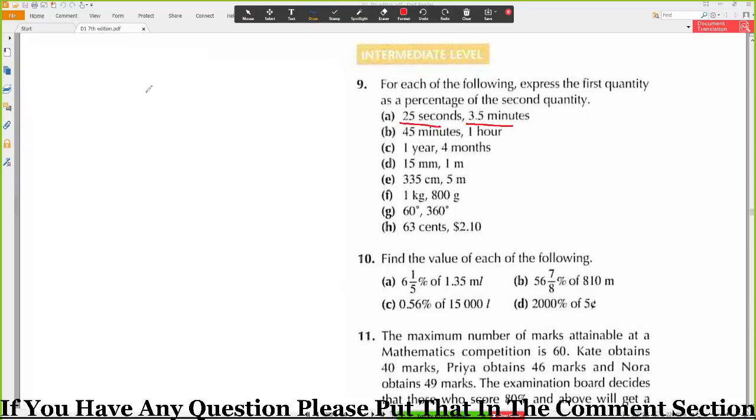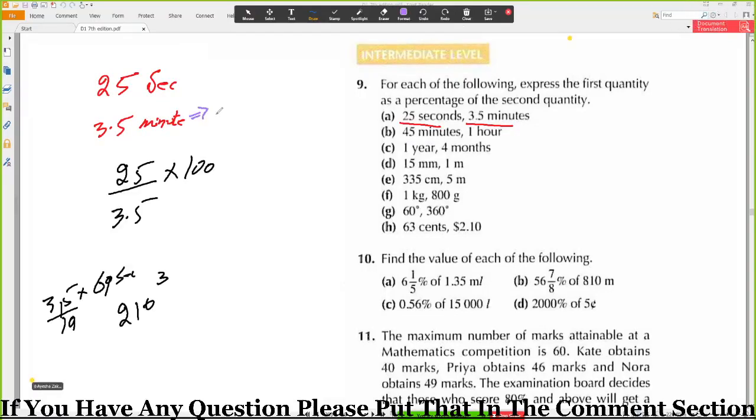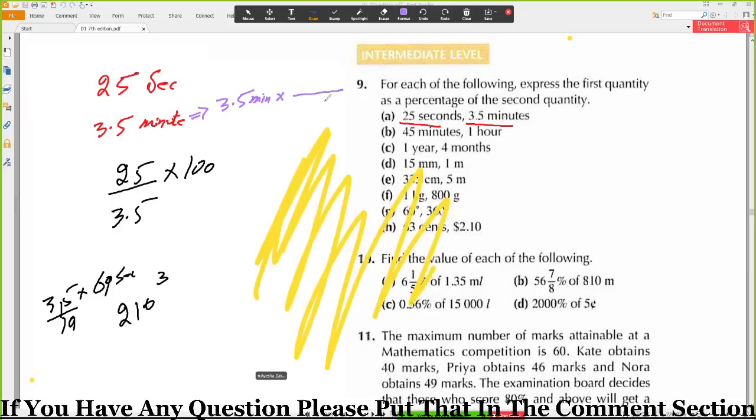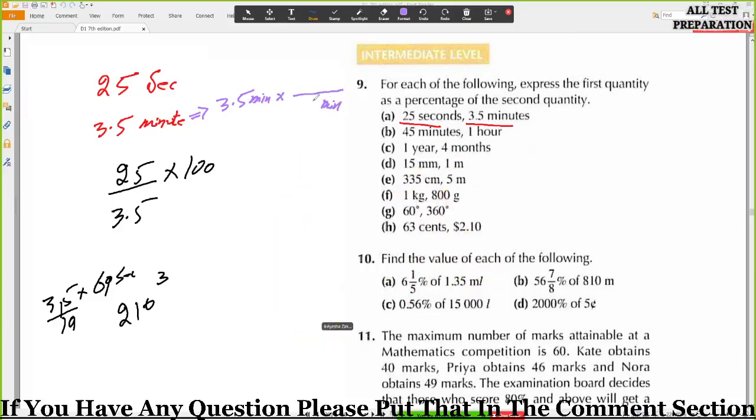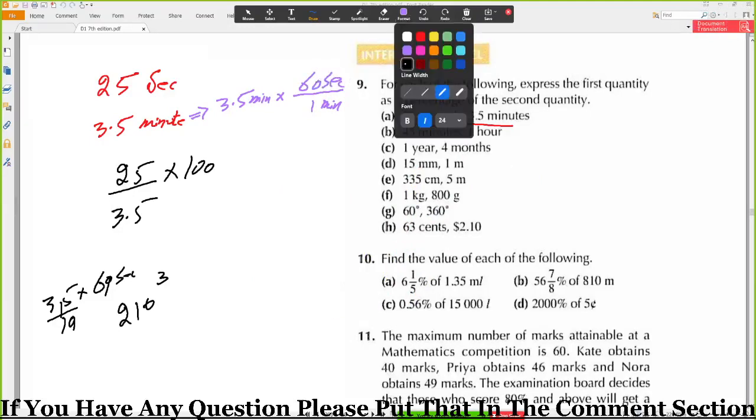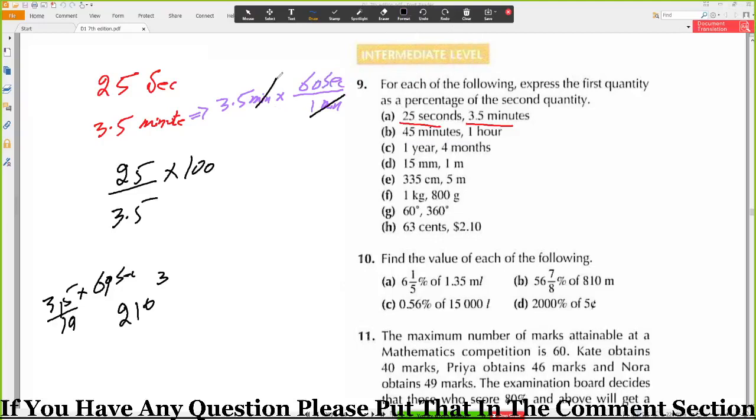So in this case, what we will do: first quantity is 25 seconds, second quantity is 3.5 minutes. So this is 3.5 minutes. If you write it like this, in one minute we have 60 seconds, so this minute will cancel out by this minute, so 3.5 times